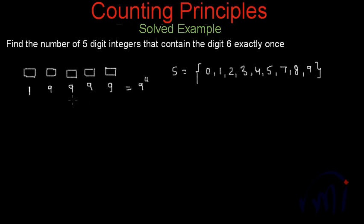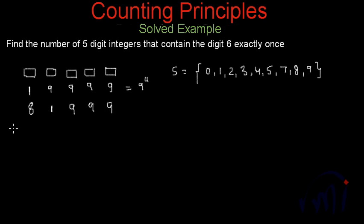If 6 is in the second place, that place has 1 choice. The first place — the leading digit — cannot be 0, so it has only 8 choices. The remaining three places each have 9 choices, since 0 is allowed there. So this case gives us 8 multiplied by 9 to the power of 3 choices.